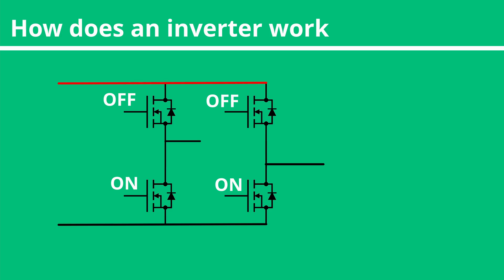For the first part of our sine wave — the positive part — we turn the top MOSFET on the first inverter on, and the bottom MOSFET on the second inverter on. When we want to switch the polarity for the negative side of the sine wave, we do the opposite: turning the bottom MOSFET on the first inverter on, and the top MOSFET on the second inverter on.